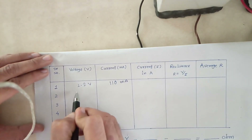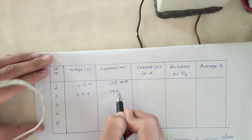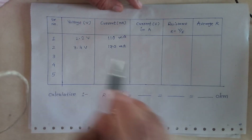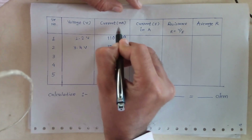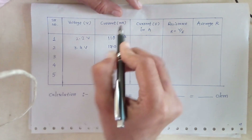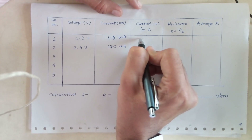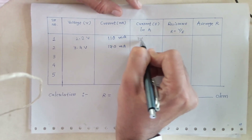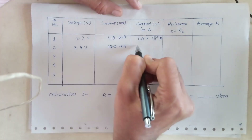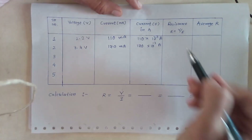So we can write: voltage 3.4 and current is 170 milliampere. Now we will convert the current from milliampere to ampere. Remember the relation: 1 milliampere is equal to 10 raise to minus 3 ampere. So 110 milliampere becomes 110 × 10⁻³ ampere, and 170 milliampere becomes 170 × 10⁻³ ampere.